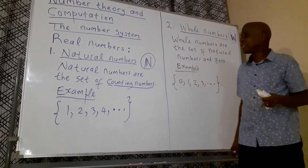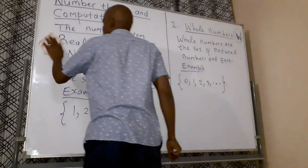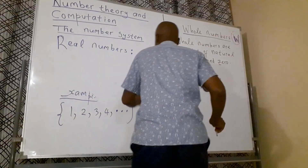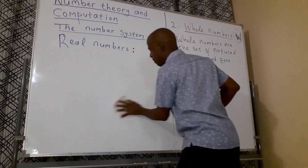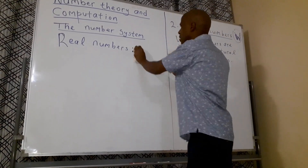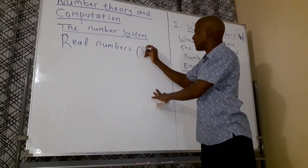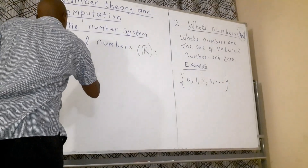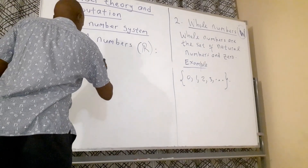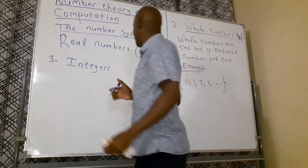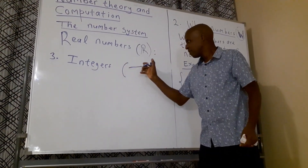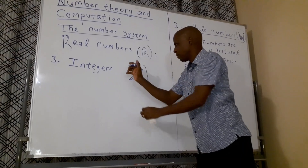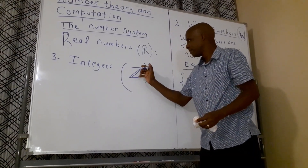The next thing you need to know under the number system is called Integers. By the way, you can also denote whole numbers by R written like this. The third one is called Integers, and it is denoted by the letter Z.